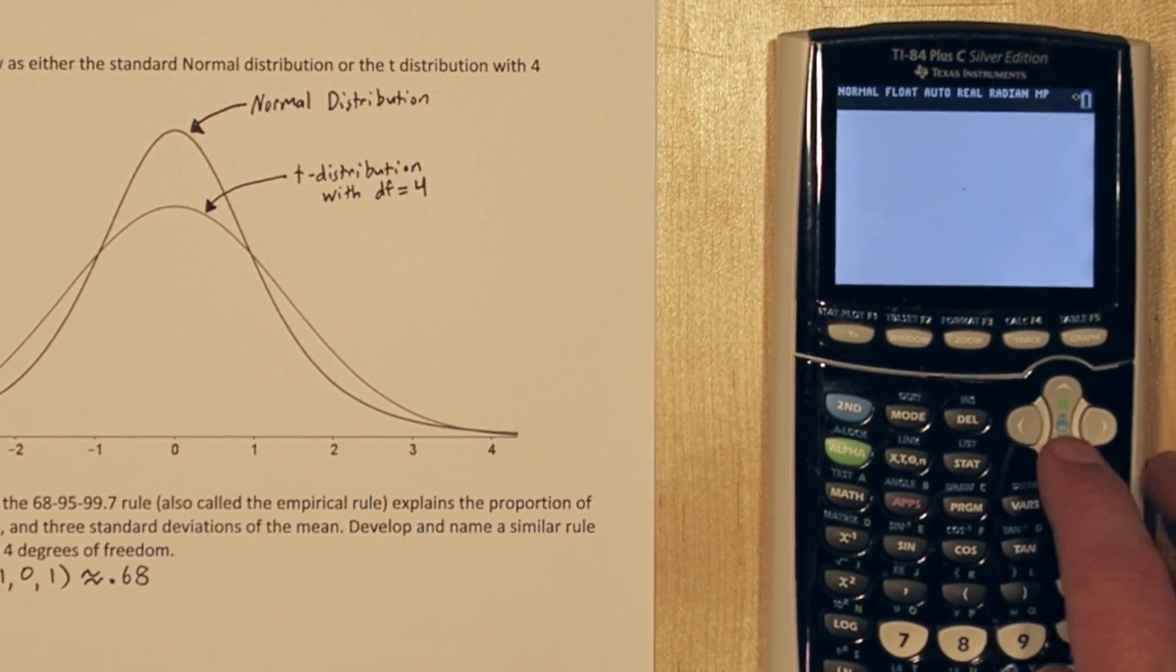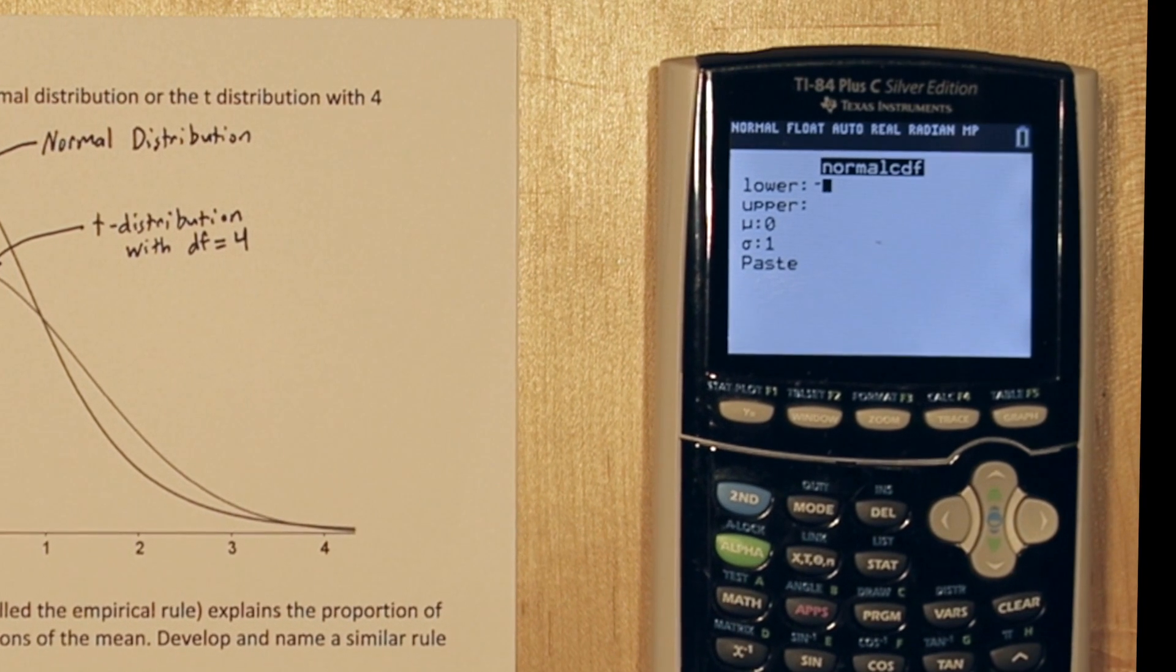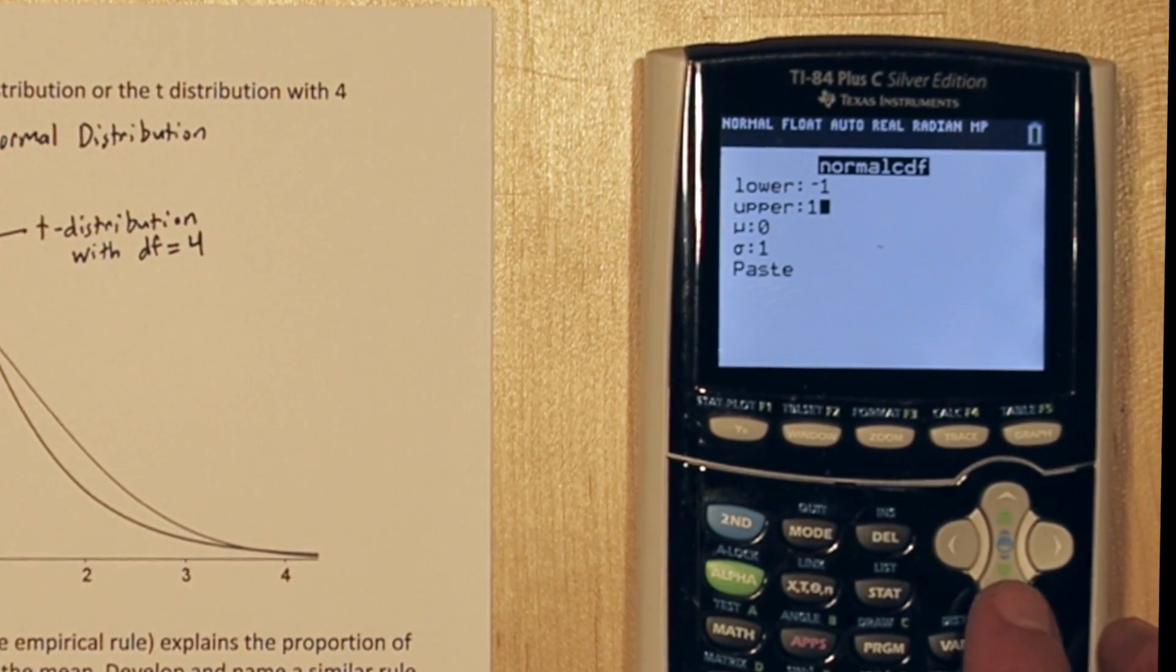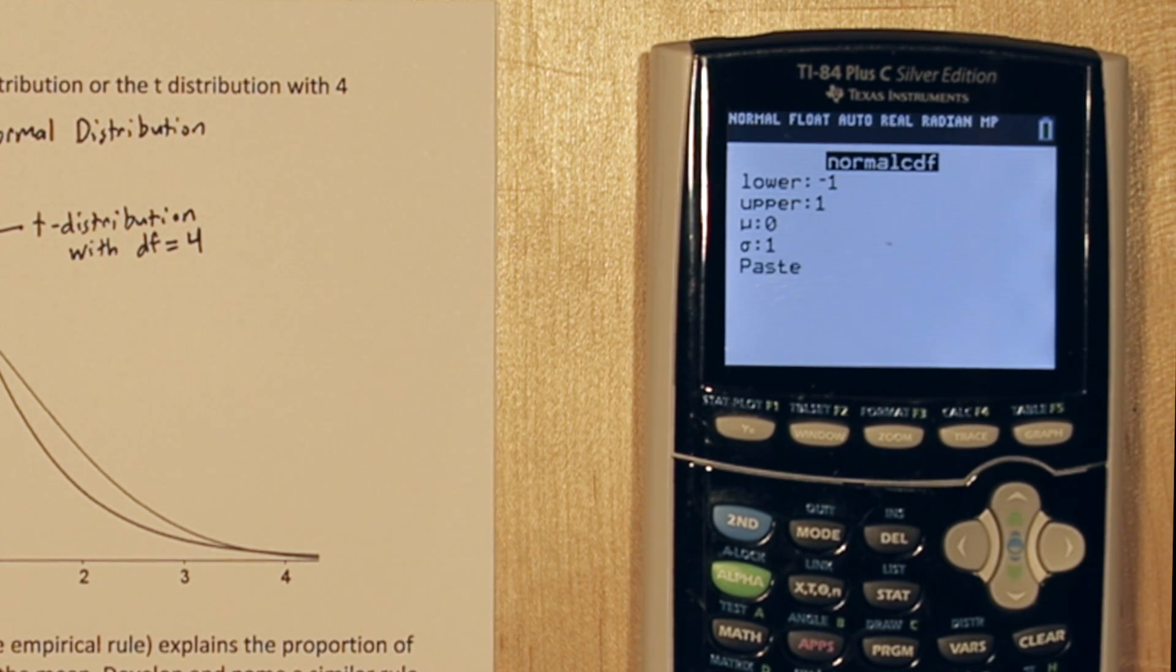If we press 2nd, vars, and go to norm CDF, and we do a lower limit of negative 1 and an upper limit of 1 with 0 and 1, this will check how much of the area of the standard normal distribution is within one standard deviation. And sure enough, it's about 68%.